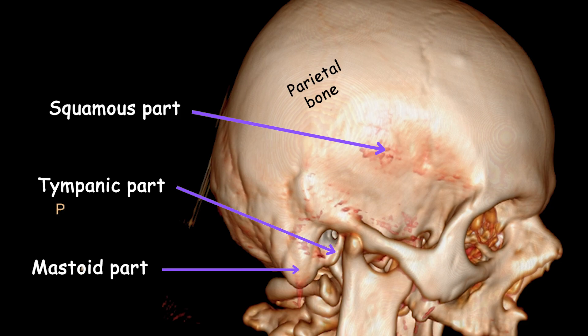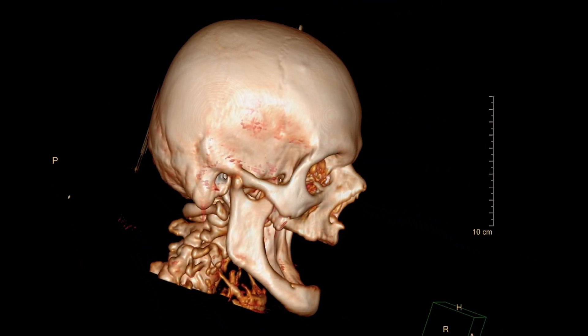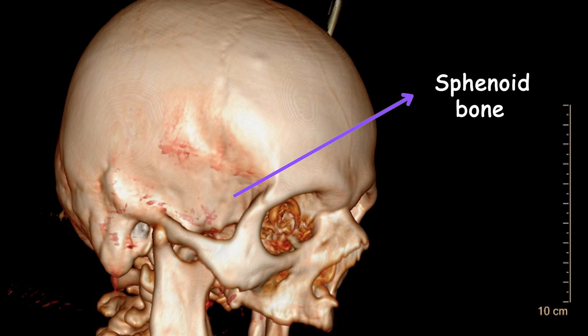The squamous part is a flat, thin section that forms the lateral surface of the skull. The mastoid part is located posterior to the petrous part and contains air-filled spaces called mastoid cells; it has a bumpy texture due to its mastoid process, which serves as an attachment site for muscles. The tympanic part is a small section that contributes to the formation of the external acoustic meatus, or ear canal. Anterior to the temporal bone is the sphenoid bone, a complex cranial bone situated at the base of the skull in the central region, known as the middle cranial fossa.